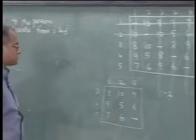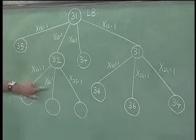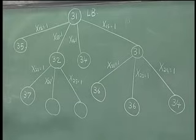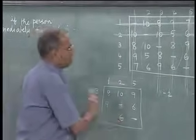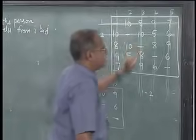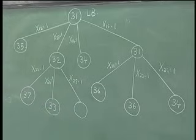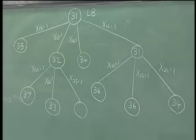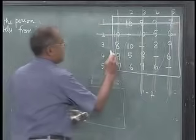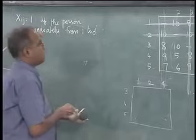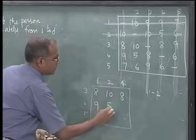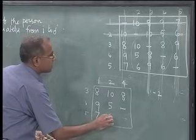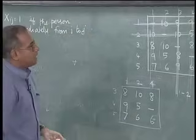With Z=34 as the best feasible solution, we can now fathom several nodes. The node with lower bound 35 is fathomed since 35 > 34. The node with lower bound 36 is fathomed. The node with x_15=1, x_24=1 (lower bound 34) can also be fathomed since any solution from it would be ≥34, which is no better than our current best. Similarly, nodes with lower bounds ≥34 are fathomed.